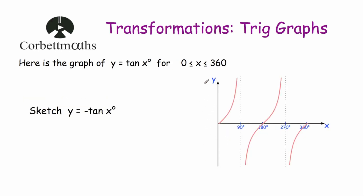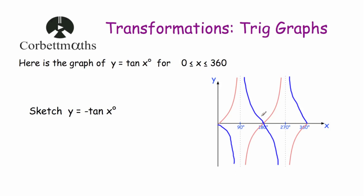Finally, here's the graph of y = tan x between 0° and 360°, with asymptotes at 90° and 270°. We've been asked to sketch y = -tan x. The minus sign is in front of the function, so it's a reflection in the x-axis — points above go below, and points below go above. The points (0°, 0), (180°, 0), and (360°, 0) remain invariant, and the graph reflects to look like a mirror image flipped vertically.